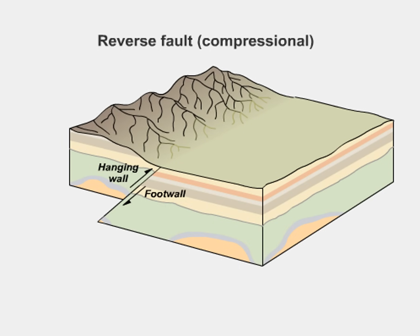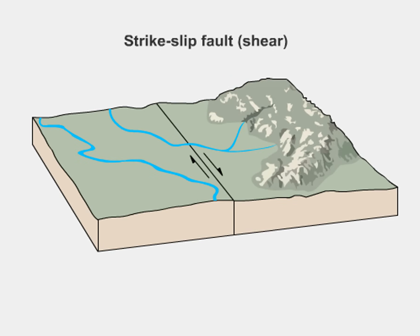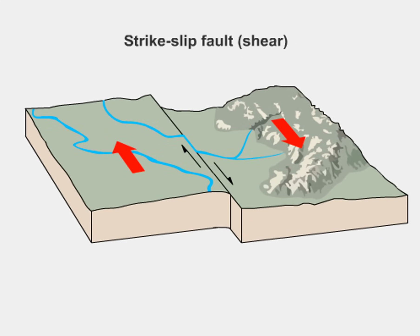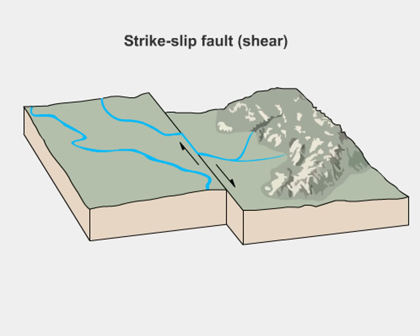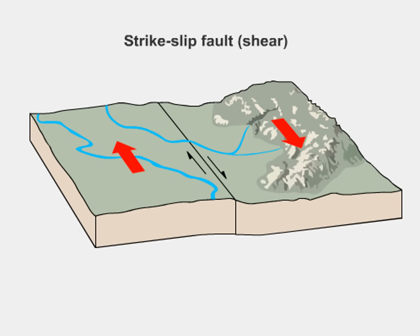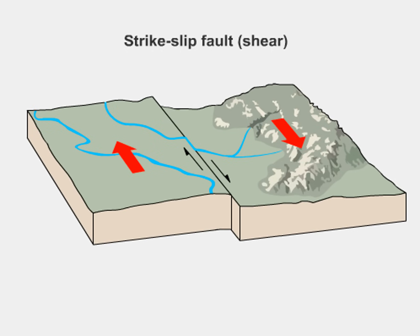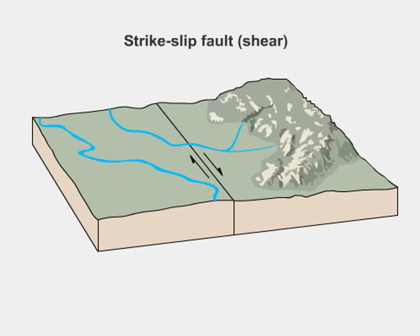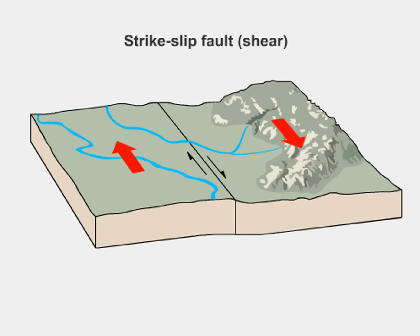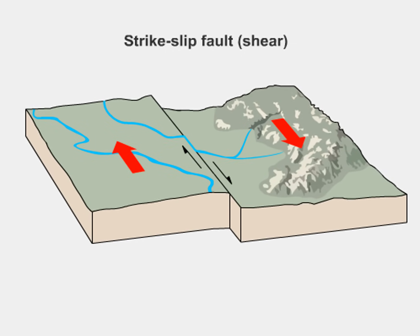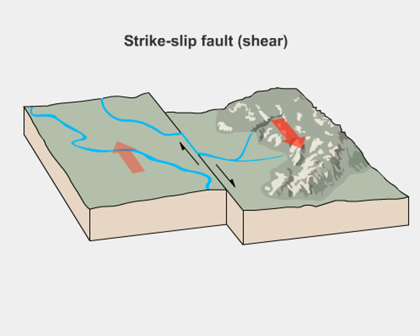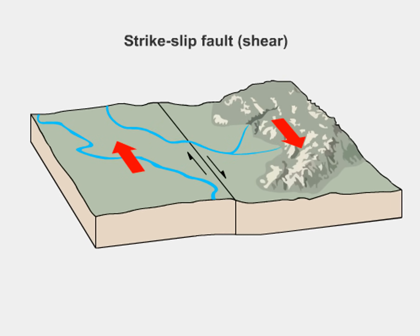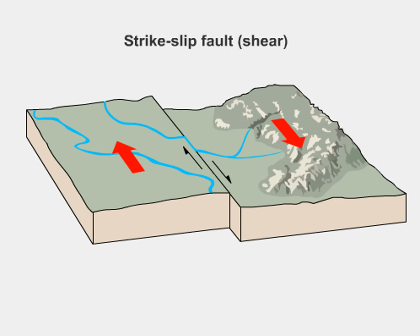A strike-slip fault develops from shear stresses, causing one side of the fault to move horizontally past the other. In the animation, click strike-slip fault and then play to begin. Notice that horizontal movement along the strike-slip fault may displace the course of a stream. Such offset streams commonly develop from ongoing displacement along a strike-slip fault. Select figure three to see a diagram illustrating common landforms that develop from strike-slip faulting. Select figure four to see a photograph showing displacement along a strike-slip fault.